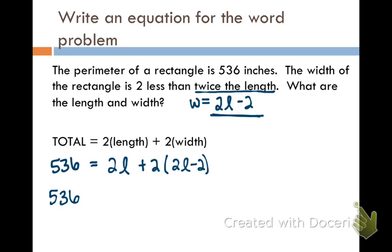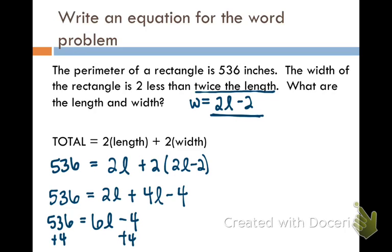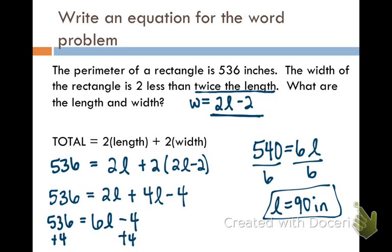So we're going to start by distributing through the parentheses. So we get 4L minus 4. We're going to combine like terms on the right side. And now it's just a 2 step problem. We're going to add the 4 over. We're going to come back over here. And then divide by 6 inches. And there we go.